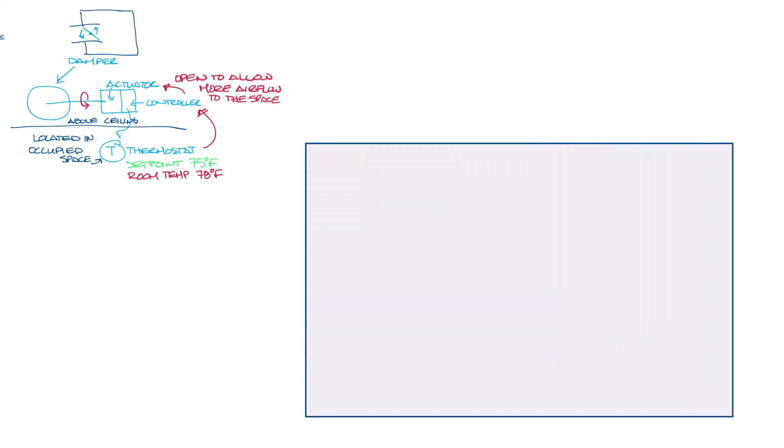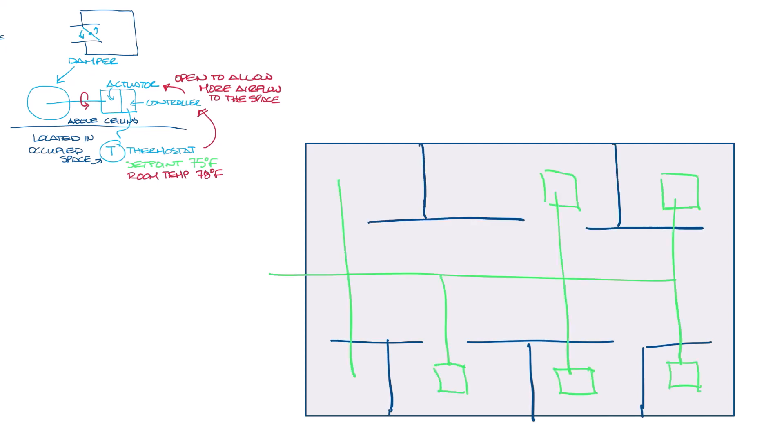So why is this good? Well, let's look at a whole building. You have a building with several different zones and each zone has a VAV box supplying it. So let's draw our VAV boxes. And now each zone also has a different number of people working in them. So let's put some people in those spaces.